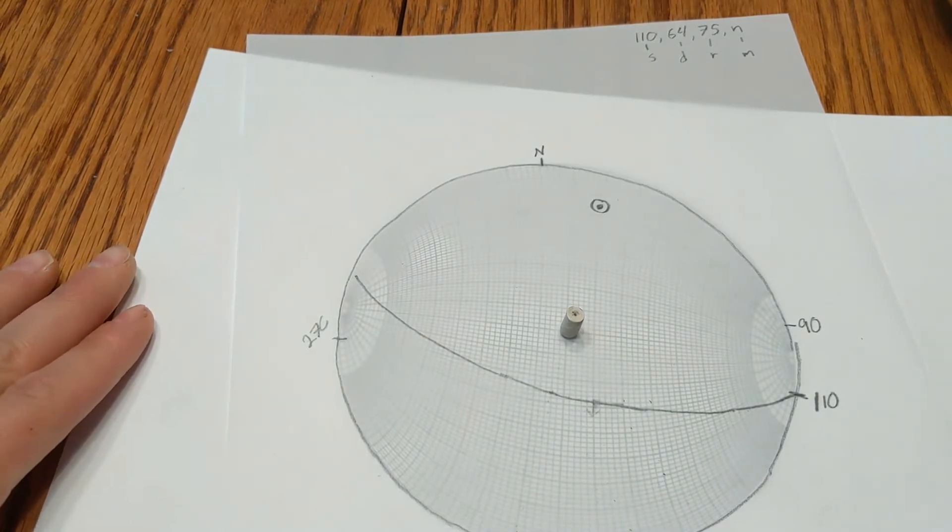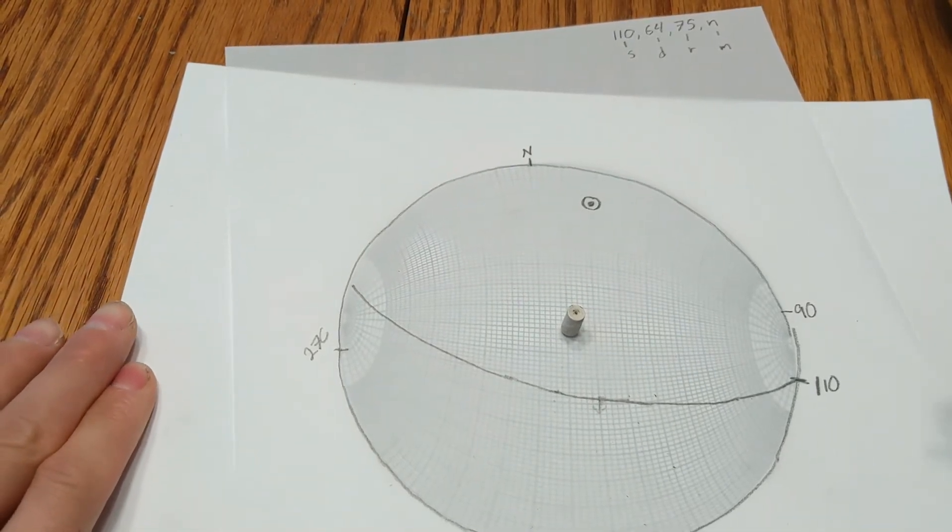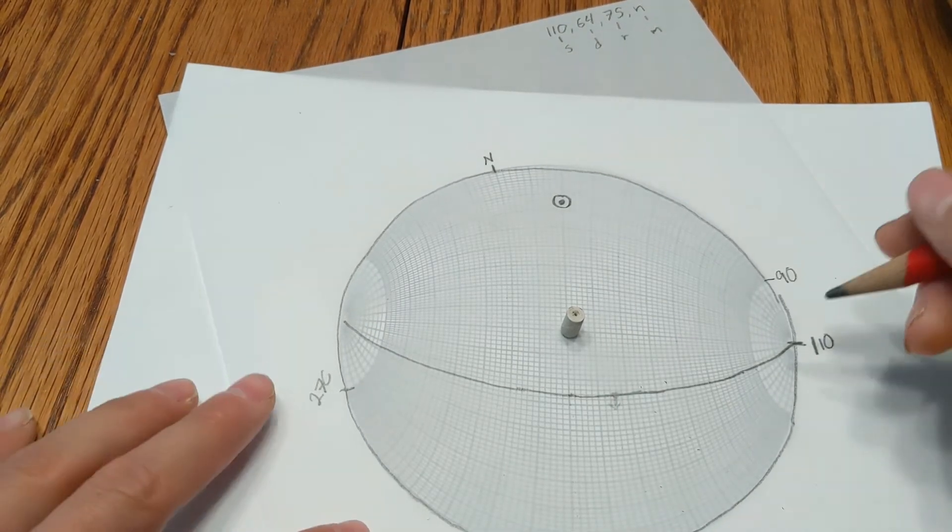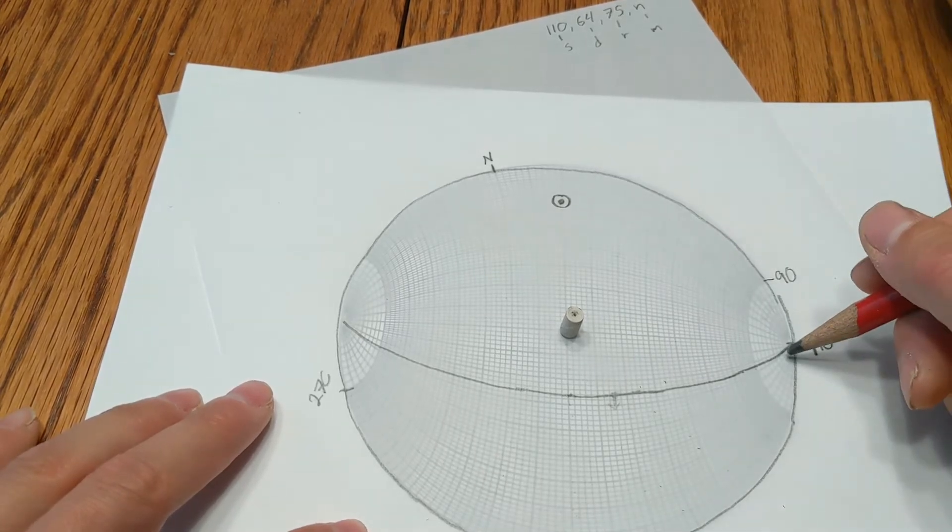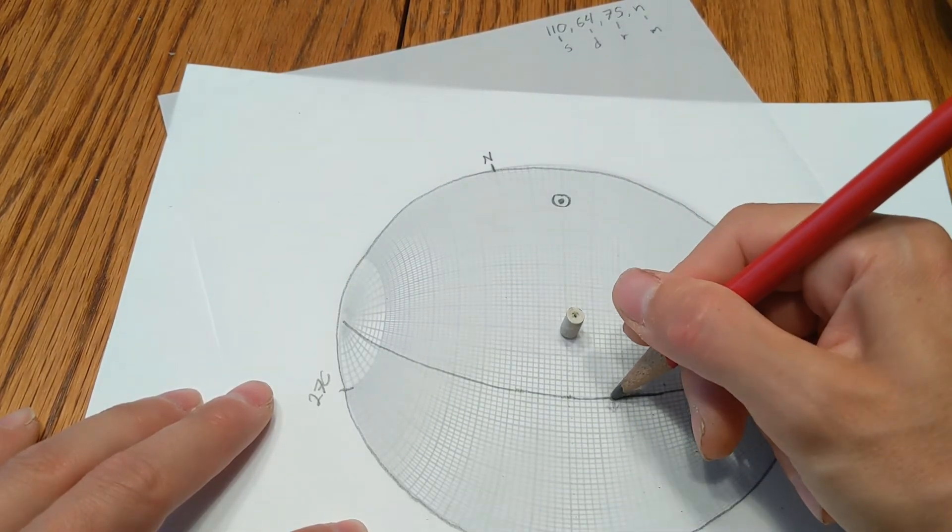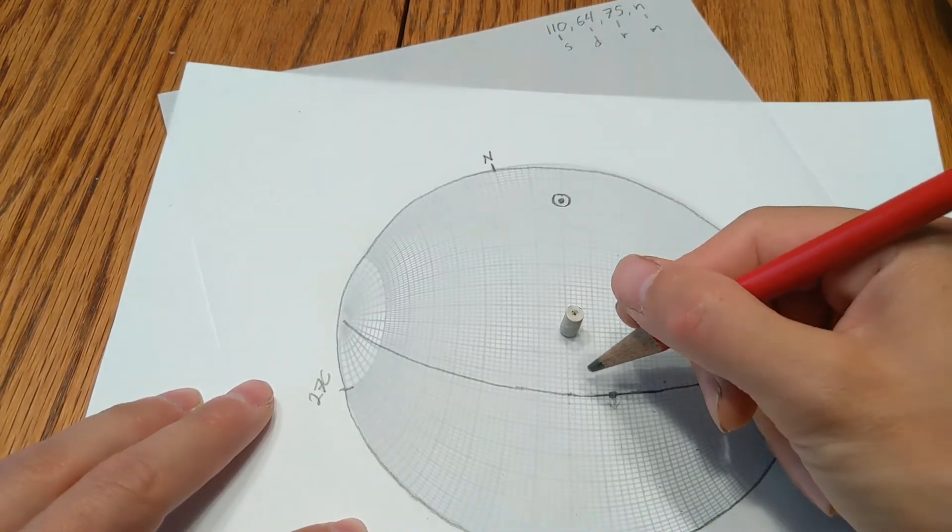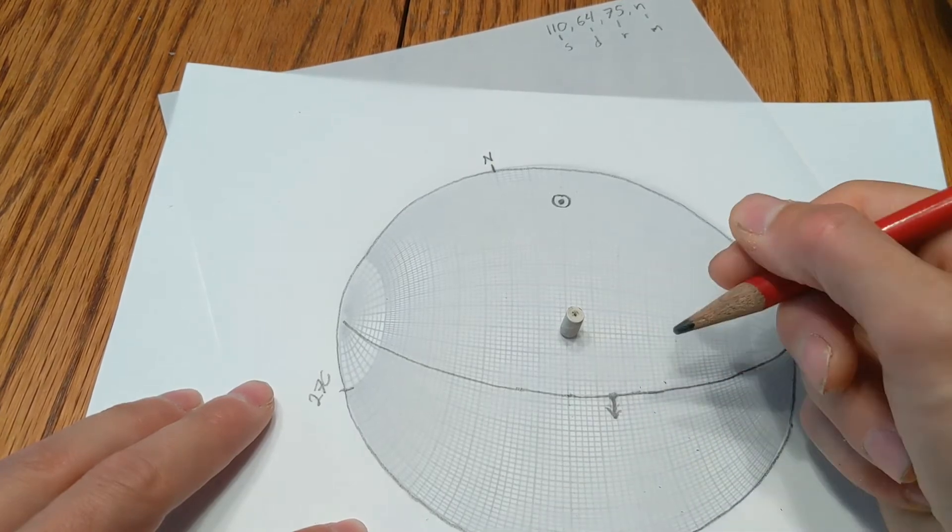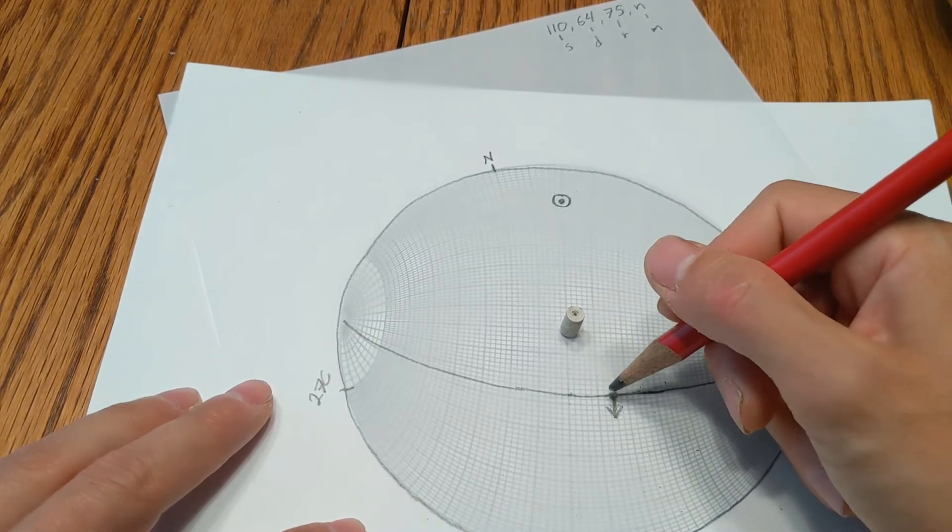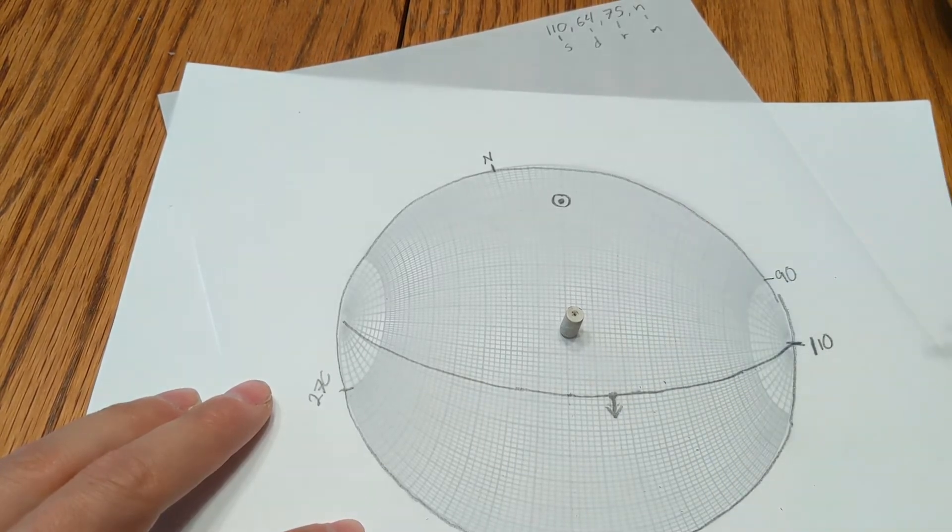Alright, so now the next step is to plot the rake, which is 75. And for that, we are going to use the small circles. And we are going to count from the right along the small circles, 75 degrees. So we have 10, 20, 30, 40, 50, 60, 75. And we'll put a point there. And then to show the fault motion, it's normal. For normal faults, you draw an arrow pointing down off of that rake. So this is basically showing the direction of motion along that slicken line on the fault plane. If it's a reverse fault, you would draw that going up.